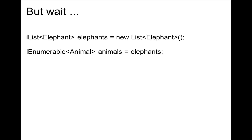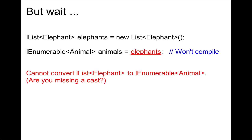You'd think that we'd have this problem all fixed, but wait. Here we have an IList of Elephant called elephants, and on the second line we have an IEnumerable of Animal called animals, and we assign that to elephants. The answer is that it won't compile — you get an error that you cannot convert an IList of Elephant to IEnumerable of Animal. And if you think about it, this really should be able to compile. This is type-safe, and yet it doesn't.